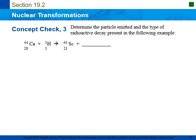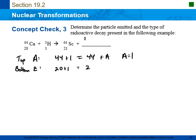One last concept check on nuclear transformations. We're going to determine the particle emitted and the type of radioactive decay. Setting up the top equation: 44 plus 1 equals 44 plus A, so A must equal 1. For the bottom equation: 20 plus 1 equals 21 plus Z, so Z must equal 0. With a mass number of 1 and an atomic number of 0, that corresponds to a neutron. So the type of decay here is neutron emission.